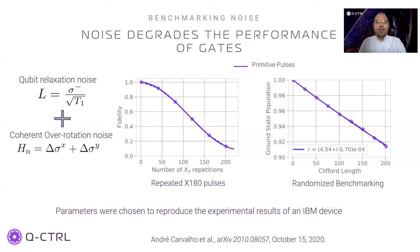On the left, we show the result from repeated application of X180 pulses, where the over-rotation errors accumulate and cause periodic oscillations in fidelity from the ideal state. On the right, randomized benchmarking shows decay in fidelity with increasing Clifford gate application. For these results, we have adjusted the noise parameters T1 and Δ such that the results match the experimental results seen on an IBM superconducting device. Please refer to Carvalho et al. for more details about the experimental work.